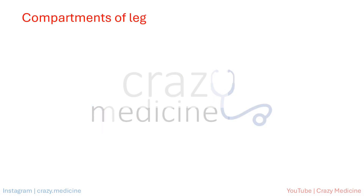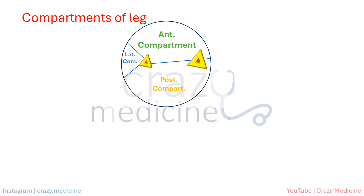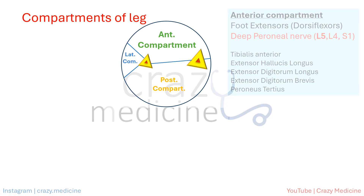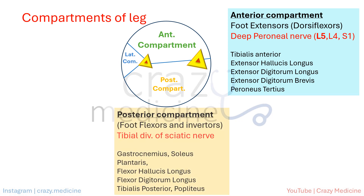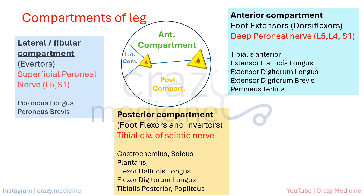Similarly, the leg has three compartments: anterior, posterior, and lateral. The anterior compartment includes extensors — that is, dorsiflexors of the foot — which are supplied by the deep peroneal nerve. The posterior compartment includes foot flexors and inverters, supplied by the tibial division of the sciatic nerve. The lateral compartment includes everters of the foot, supplied by the superficial peroneal nerve.